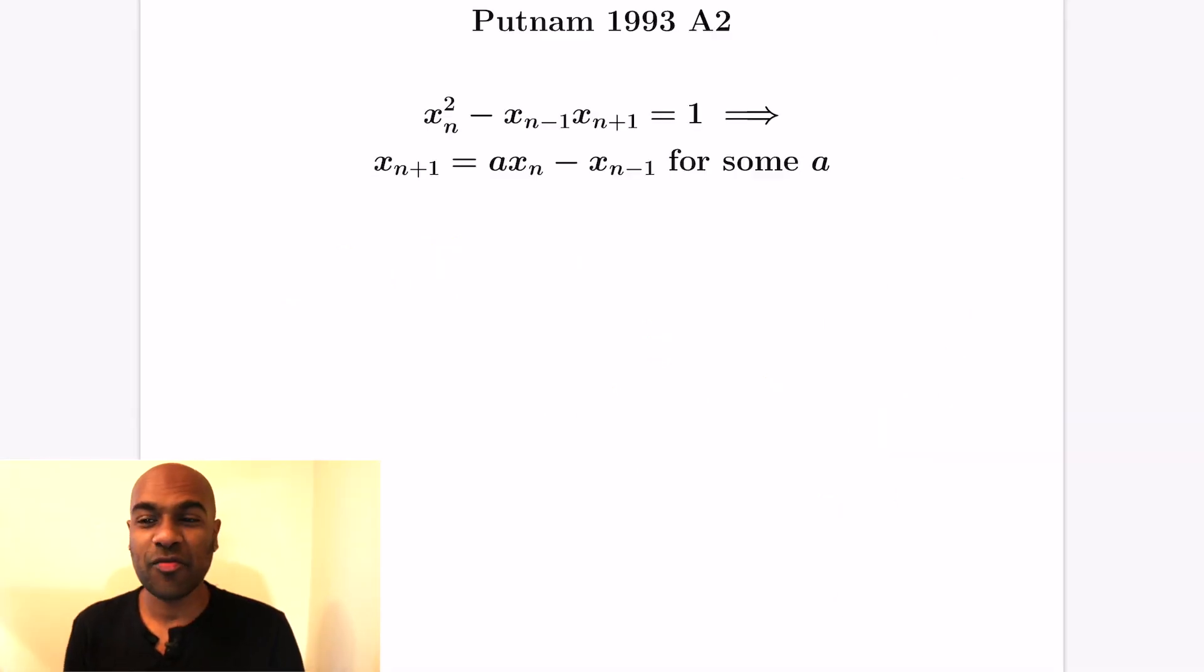The next problem is from the 1993 Putnam and it's also number A2. The question asks to prove that if you have a sequence where the square of the nth term minus the product of the term before it and the term after it is 1 regardless of what term you pick, then the sequence actually satisfies a linear recurrence equation like the one given here with the constant a.